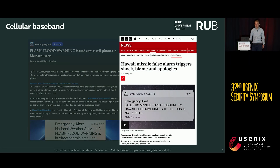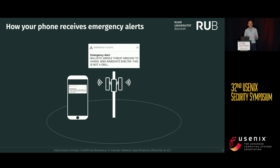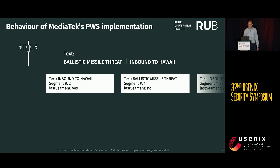One instance where this was used was the 2018 Hawaii false missile alert. How this works is that once a message is to be sent by the government, cell towers in the relevant area periodically broadcast this emergency message. Once a phone moves into the vicinity of the cell tower, it will receive the message. One interesting feature is that if the text of the message is too long to fit into a single network packet, it can be fragmented.